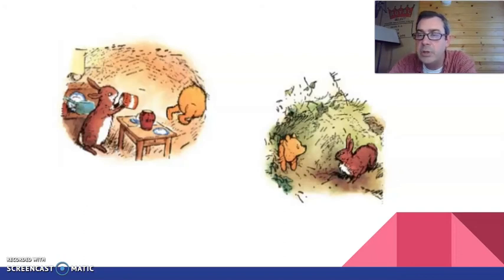The fact is, said Rabbit, you're stuck. It all comes, said Pooh crossly, of not having front doors big enough. It all comes, said Rabbit sternly, of eating too much. I thought at the time, said Rabbit, only I didn't like to say anything, said Rabbit, that one of us was eating too much, said Rabbit. And I knew it wasn't me, he said. Well, well, I shall go and fetch Christopher Robin.